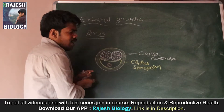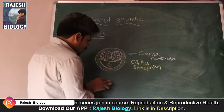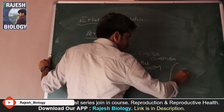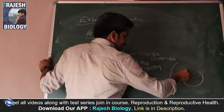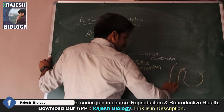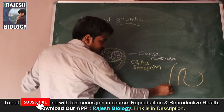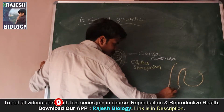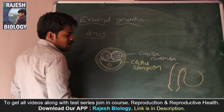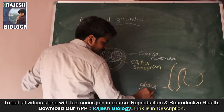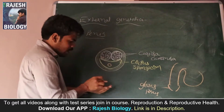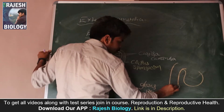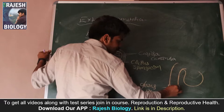The corpora cavernosa helps in the erection of the penis. Now, at the end of the penis — at the tip of the penis — there is a bulbous projection called the glans penis. This bulbous projection is called the glans penis, and it is present at the tip of the penis.